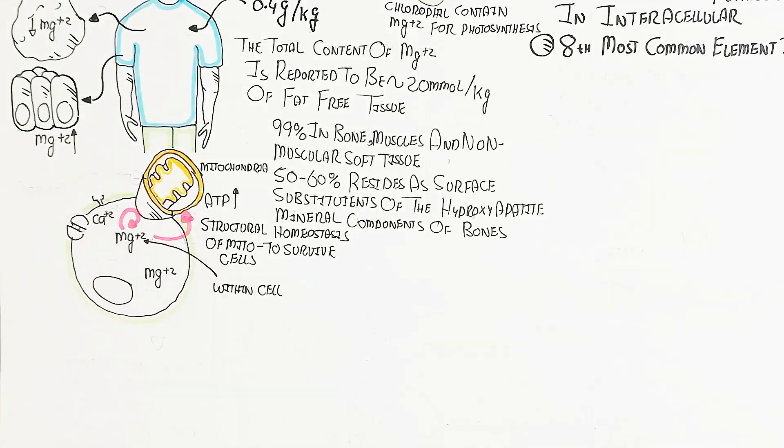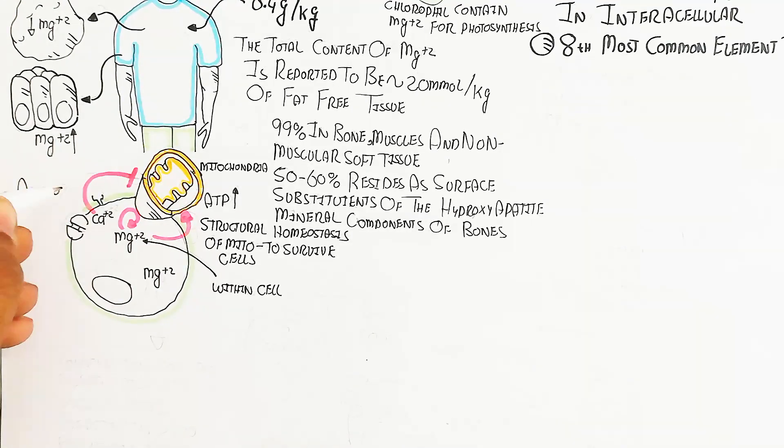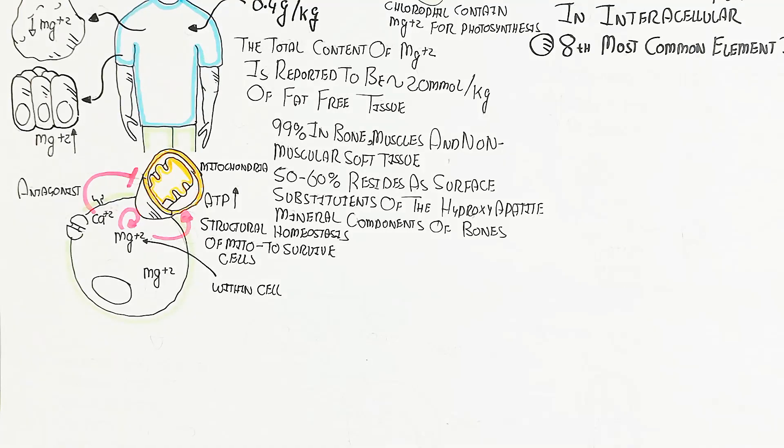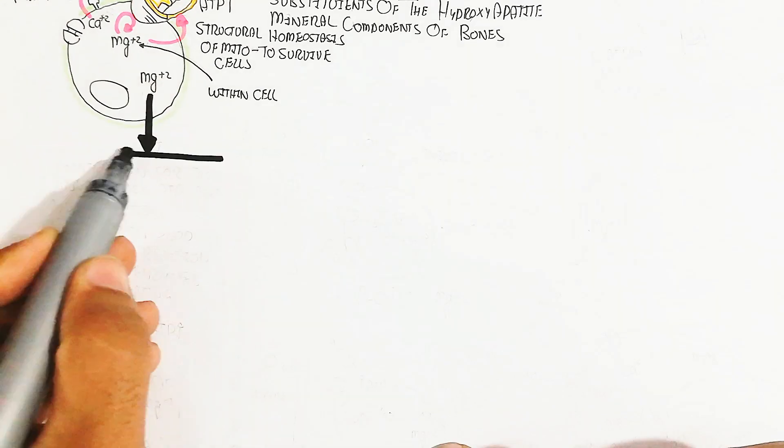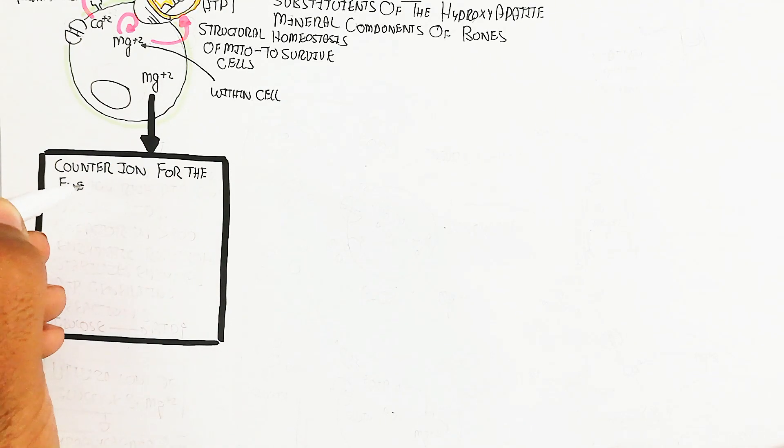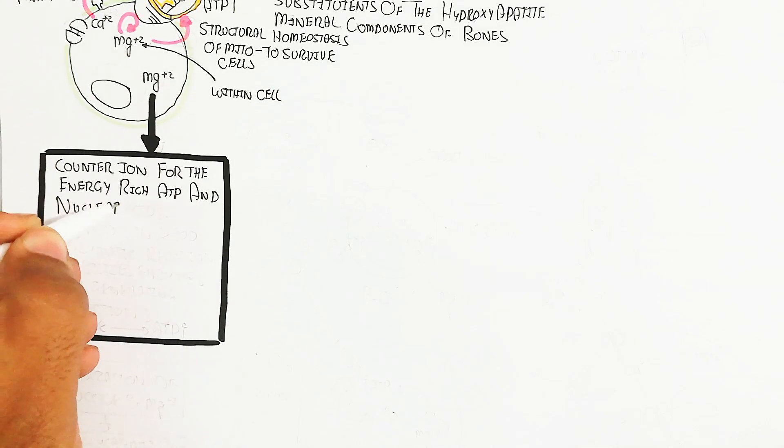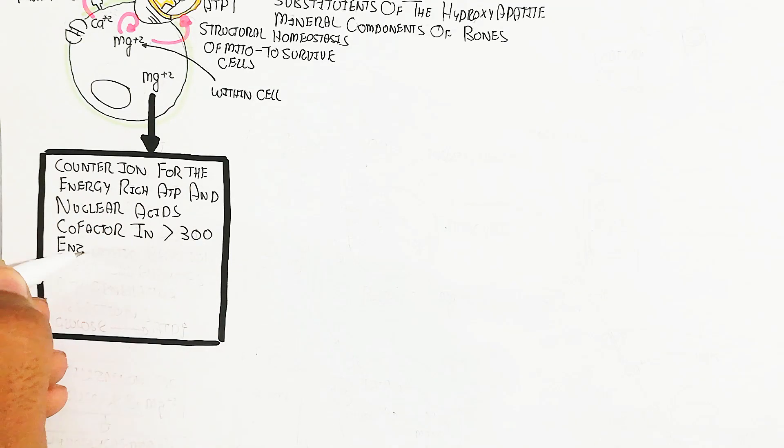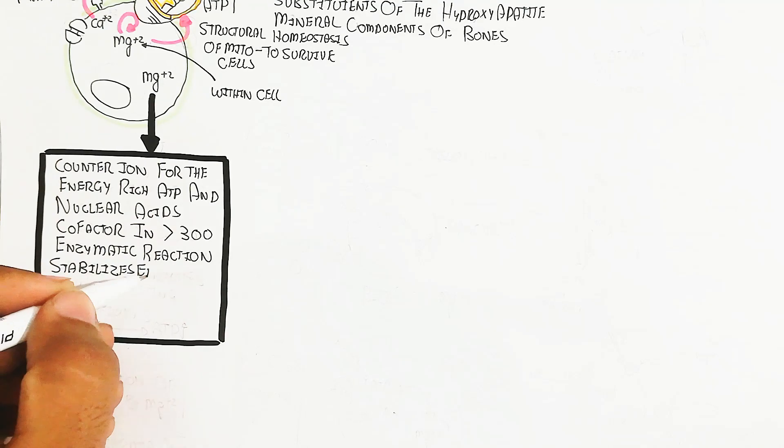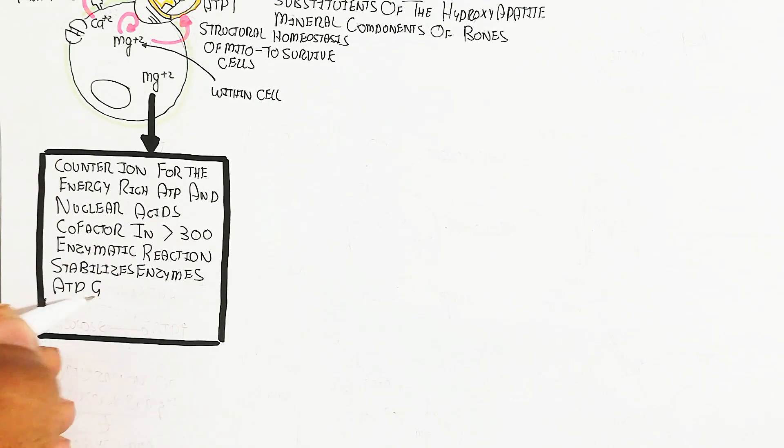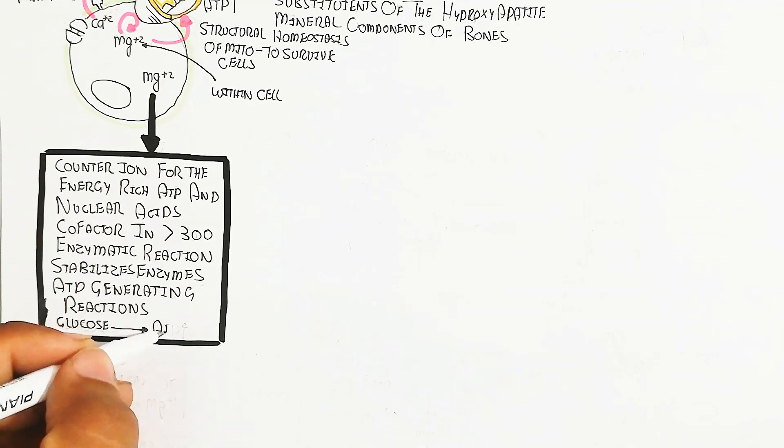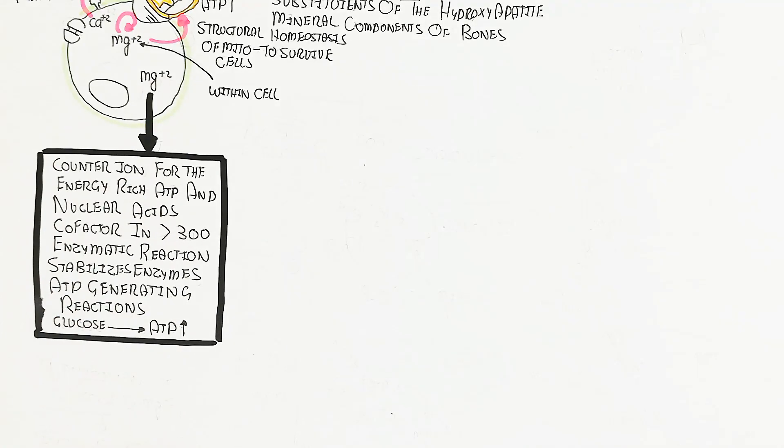The structural homeostasis of mitochondria for cell survival is due to magnesium within the cell. Magnesium increase in the cell leads to counter-ion for energy-rich ATP and nucleic acids. It's a cofactor in more than 300 enzymatic reactions, stabilizes enzymes, supports ATP-generating reactions, and metabolizes glucose to convert into ATP, increasing ATP and glucose utilization.